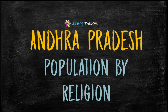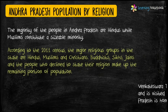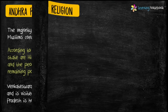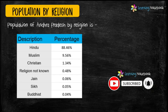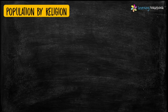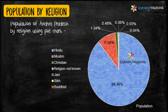The next topic for your Maths Art Integrated Project is to include population by religion. A pie chart is another beautiful way to represent the given data. You may use a pie chart to show the population of Andhra Pradesh by religion.